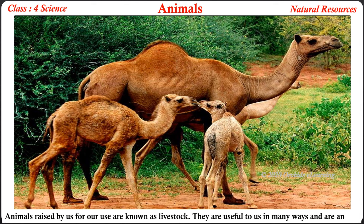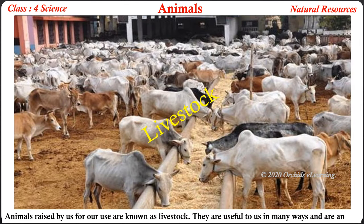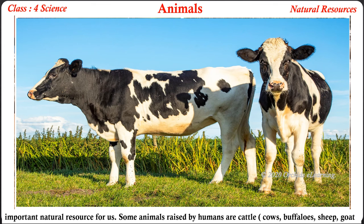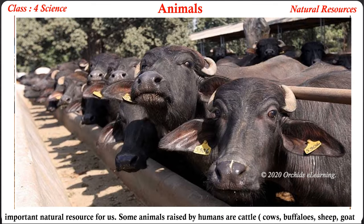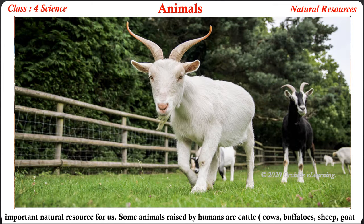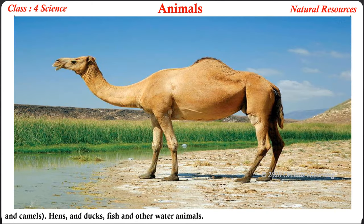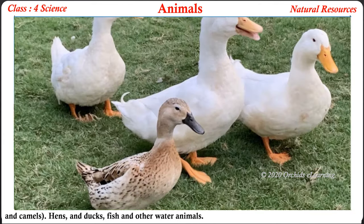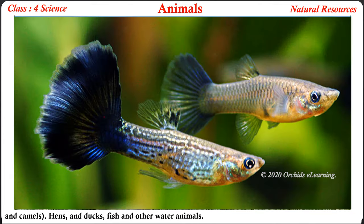Animals raised by us for our use are known as livestock. They are useful to us in many ways and are an important natural resource. Some animals raised by humans are cattle — cows, buffaloes, sheep, goats, and camels — as well as hens and ducks, fish, and other water animals.